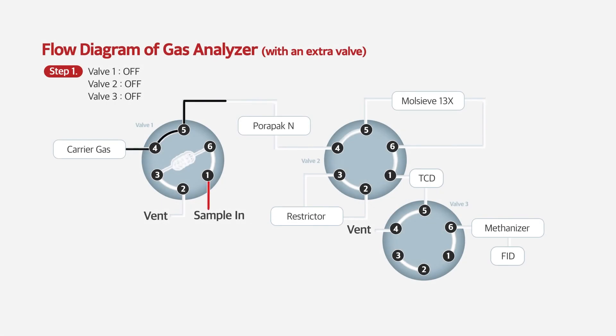When all valves are off, the sample is loaded in the loop. Turning on valve one, the sample flow is switched for injection. As described previously, hydrogen and oxygen are eluted earlier in Porapak N column, separated in molecular sieve column and detected by TCD.